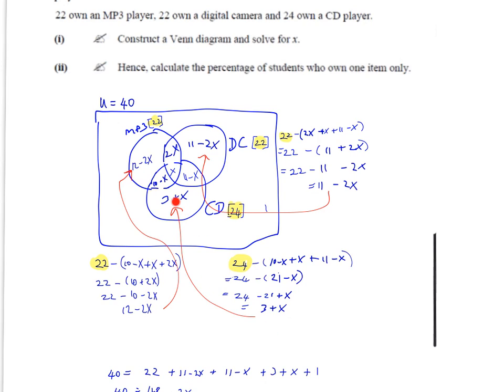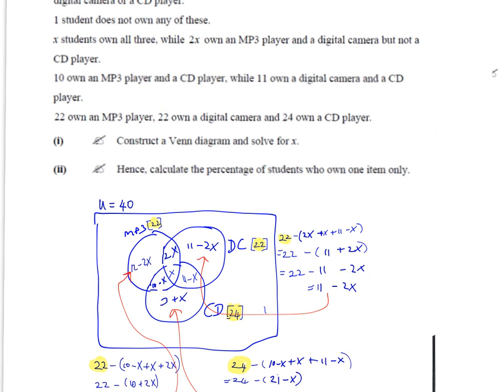Similarly for this one, 22 minus the sum of all these guys. Simplify them down, get rid of the brackets, make sure you get the sign right. 22 minus 10 gives you 12, so we're left with 12 minus 2x here. Finally, we're told that one student does not own any of these, so that one student goes out here.